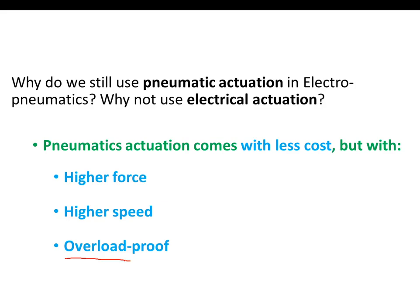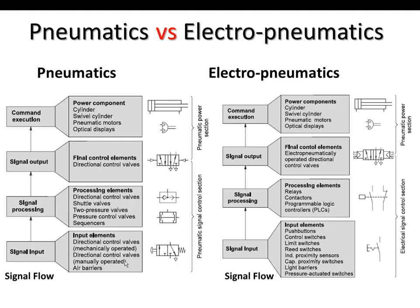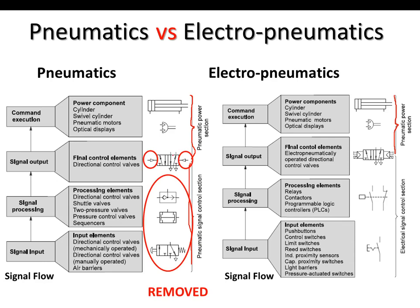Pneumatic versus electro-pneumatic: in terms of components, we have the pneumatic power section in both systems — we are not replacing the power section. We are only going to replace the part in the signal control section. Those components are going to be replaced by a solenoid, while we retain our power section.